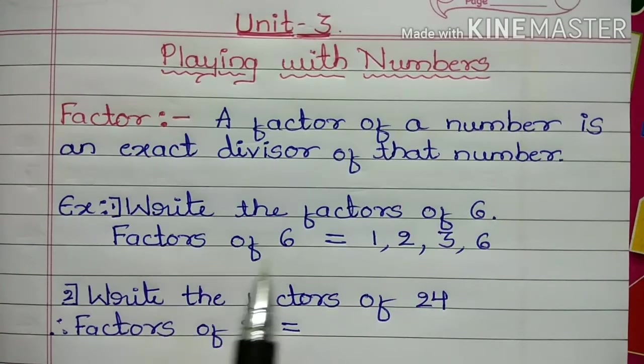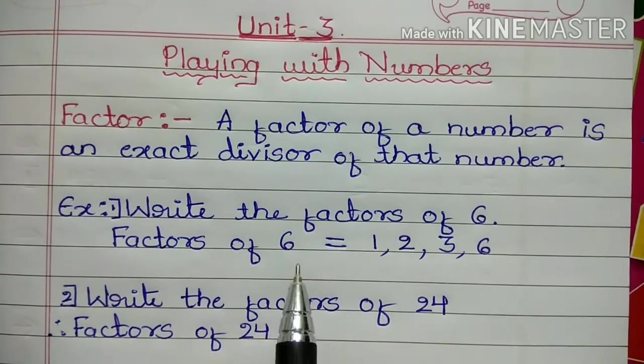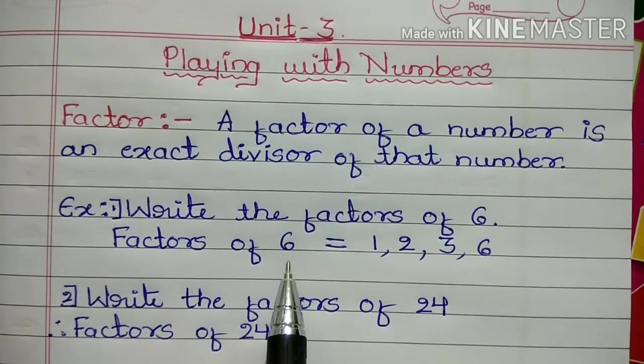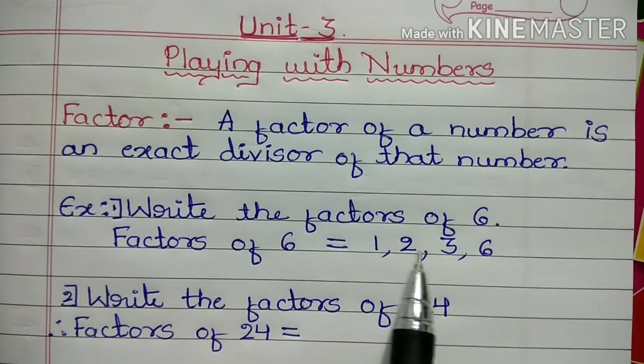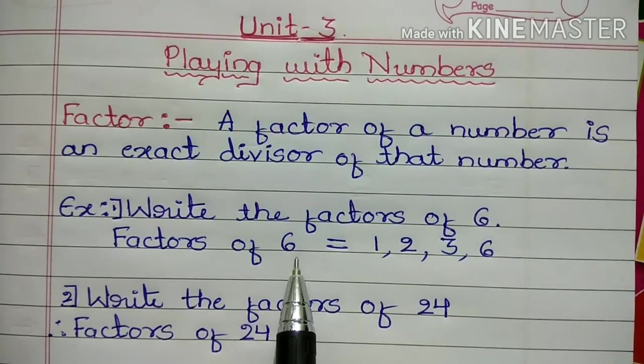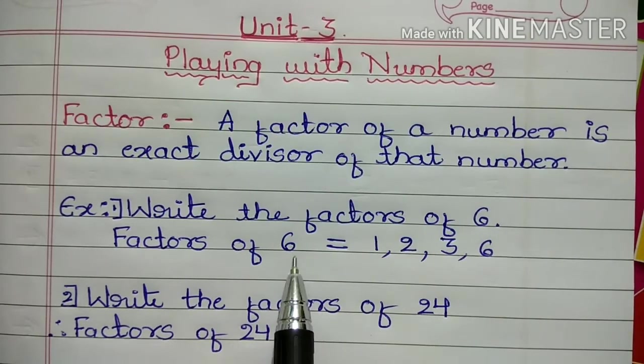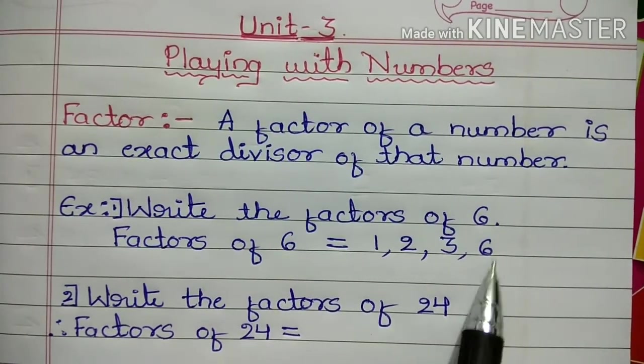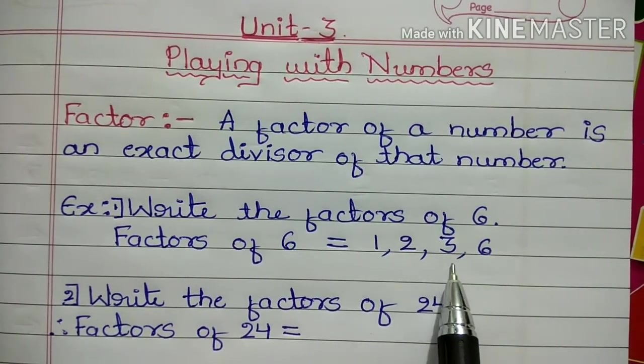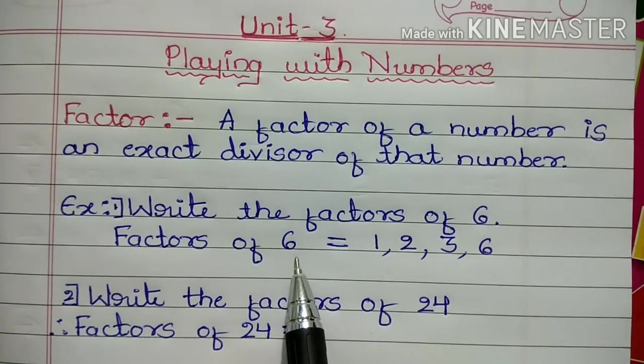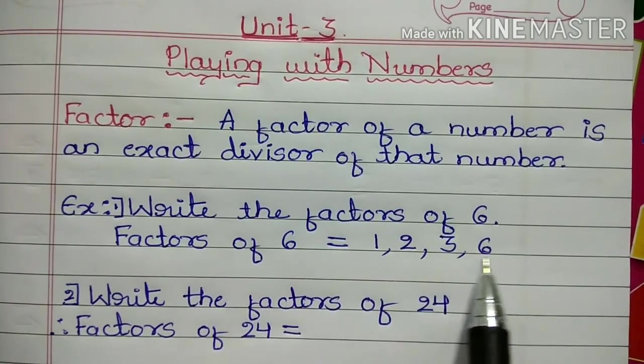Factors of 6 are 1, 2, 3, and 6. How does it come? See here children, 6 is divisible by 1 because 1 times 6 is 6. 6 is divisible by 2 because 2 times 3 is 6. And 6 is divisible by 3 because 3 times 2 is 6. And 6 is divisible by 6 because 6 times 1 is 6. That means in the 1 times table, 2 times table, 3 times table, and 6 times table, 6 is there. That means a factor of a number is an exact divisor of that number. So here, 1, 2, 3, and 6 are called factors of 6.